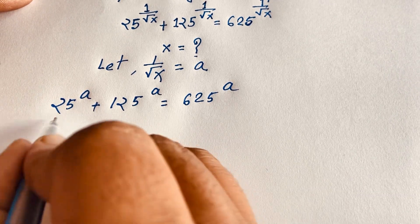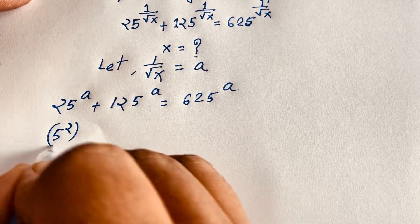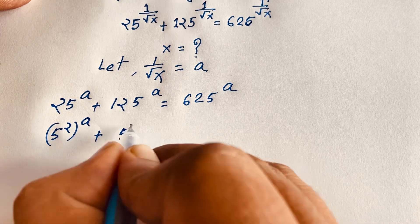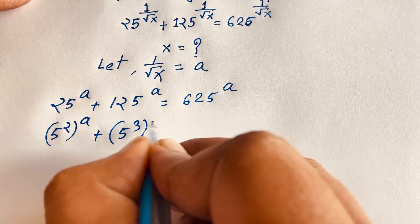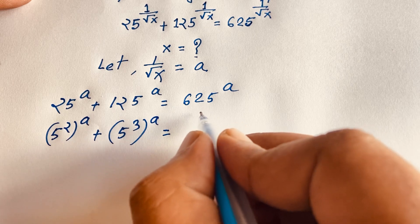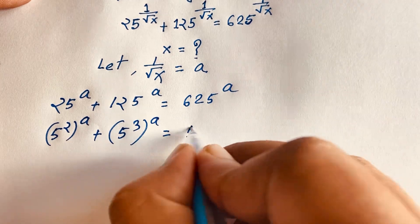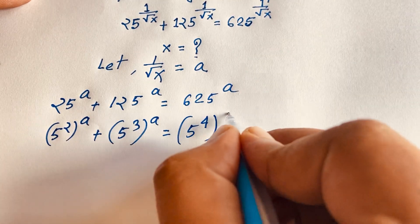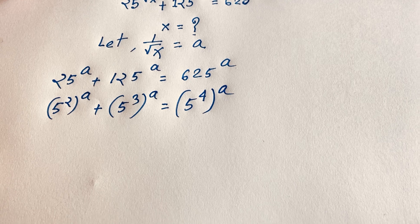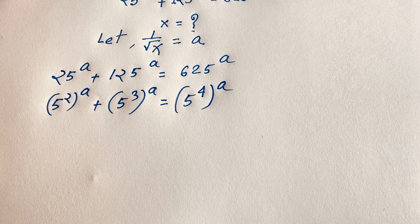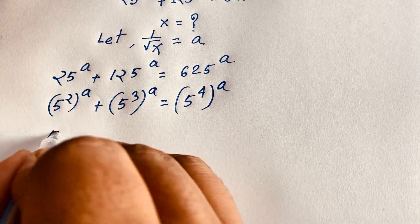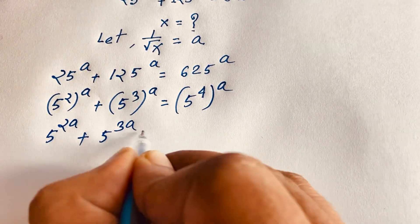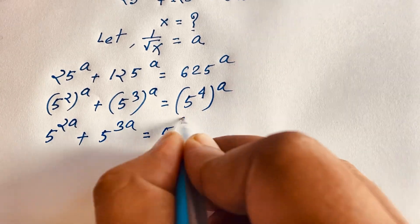Now, 25 — you know that — 25 is 5 to the power 2, whole to the power a, plus 125, which is 5 to the power 3, whole to the power a, is equal to 625, which is 5 to the power 4 (because 25 times 25 is 625), whole to the power a. According to exponential law, it will be 5 to the power 2a plus 5 to the power 3a is equal to 5 to the power 4a.